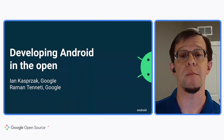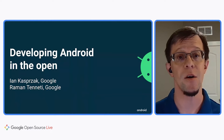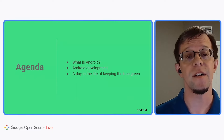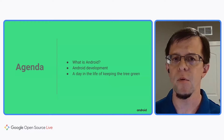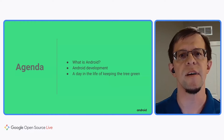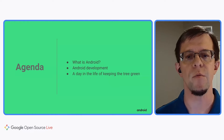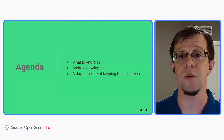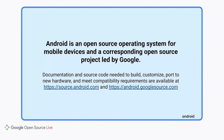Today we'll be talking about what Android is and what developing Android in the open means. First, we're going to cover what is Android, then a little bit about Android development, and finally a day in the life of keeping the Android open source tree green. Android is the open source operating system for mobile devices, led by Google. Everything you need to build, customize, port to new hardware, and meet compatibility requirements are all publicly available at source.android.com and android.googlesource.com.